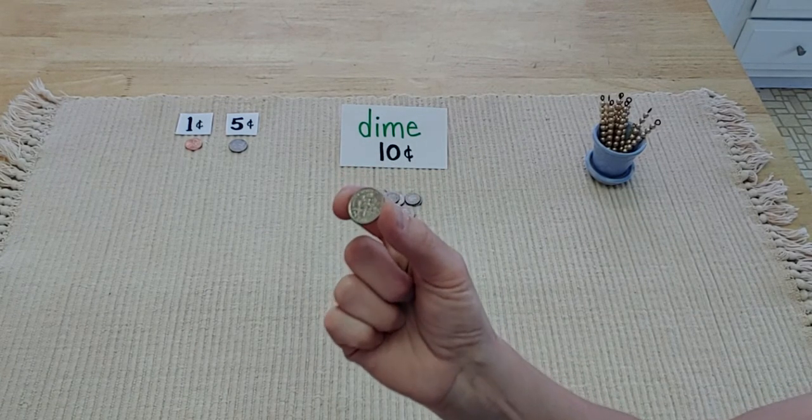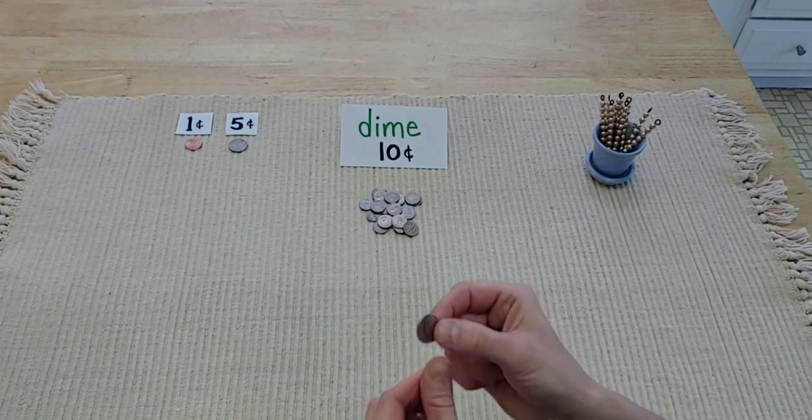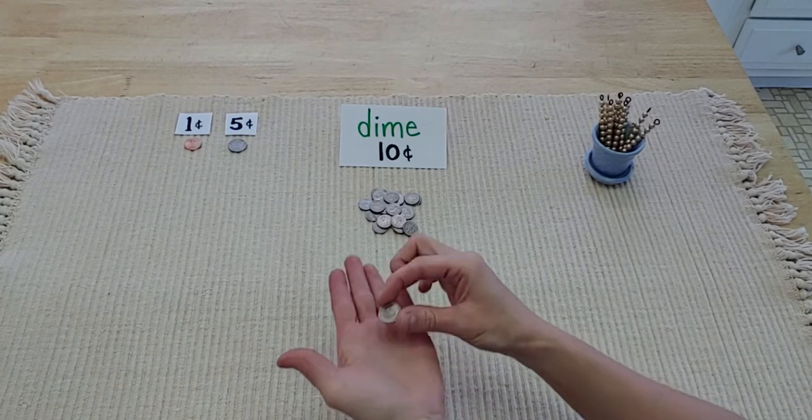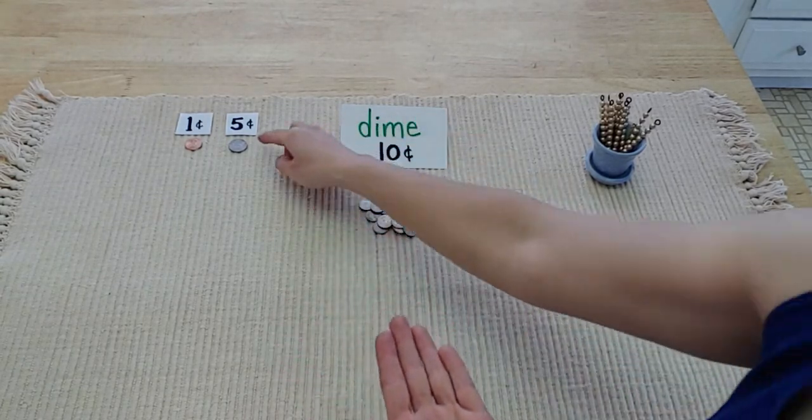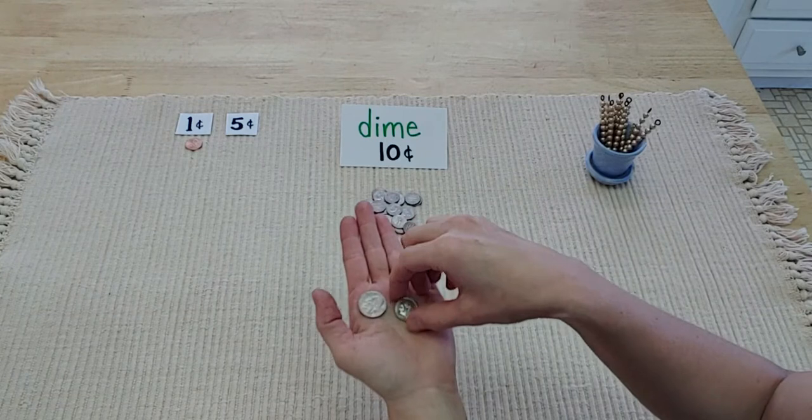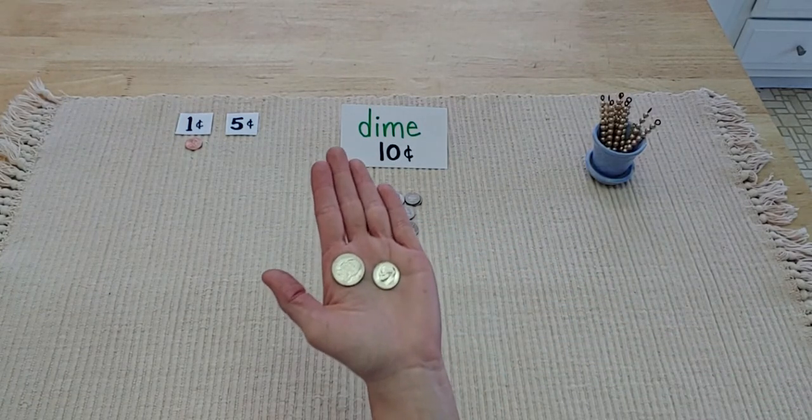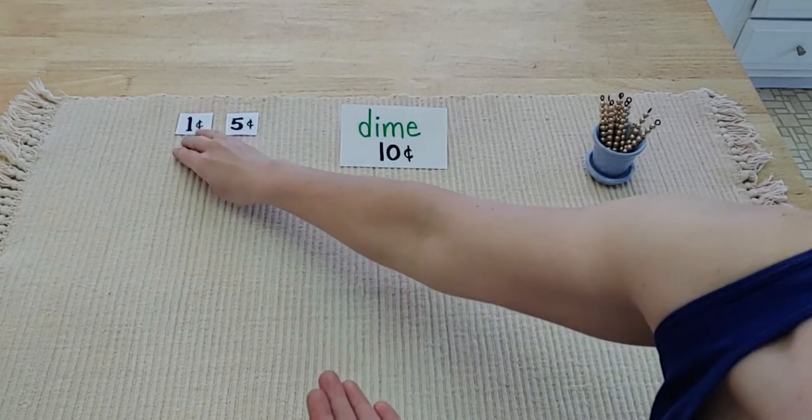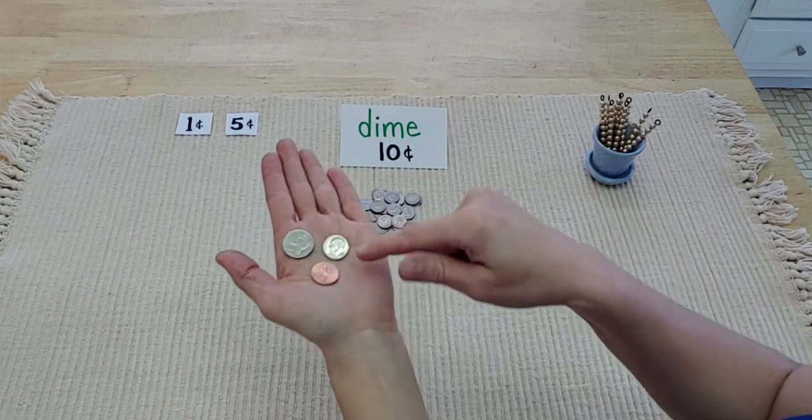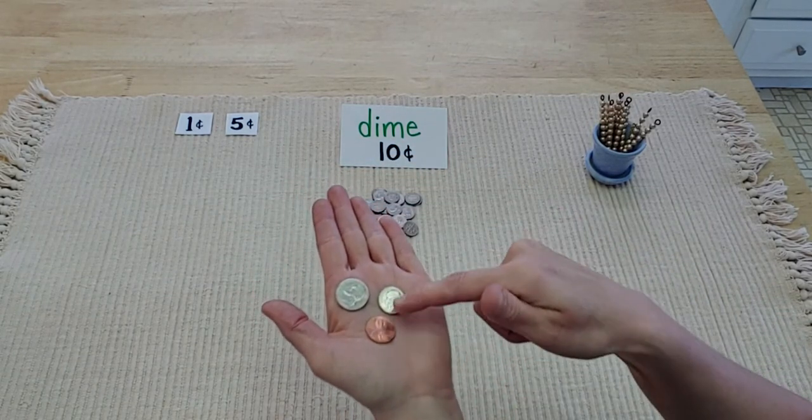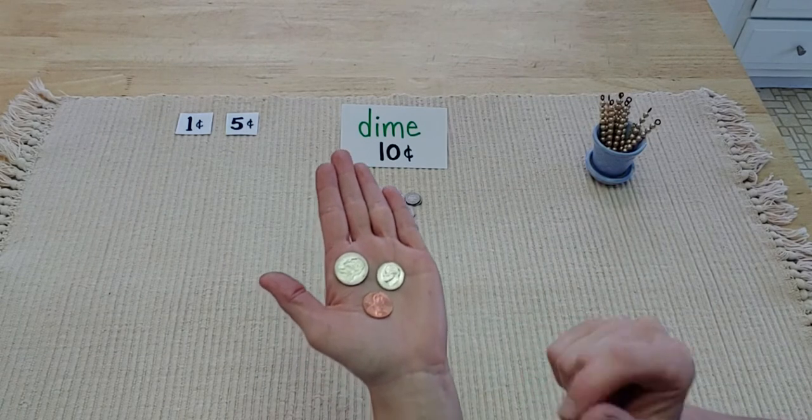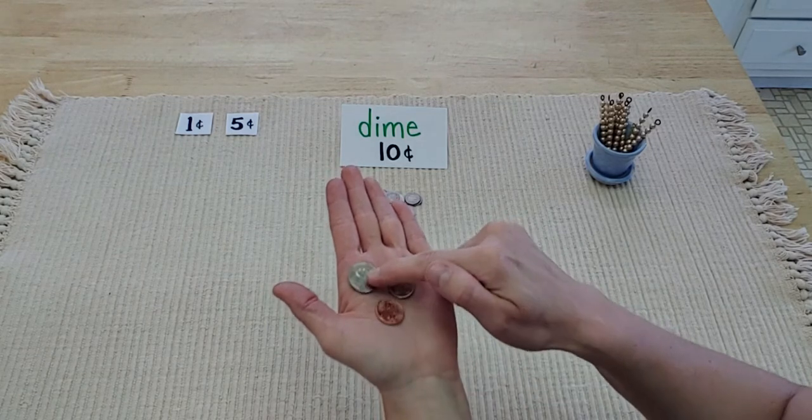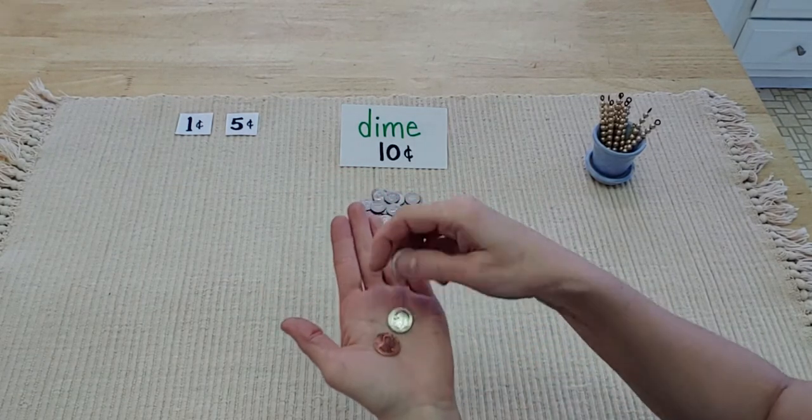Something else I want you to notice that kids get confused by: they see that this dime is so tiny and this nickel is a lot bigger, so they think the nickel must be worth more, right? No, no, no, don't get tricked! Even though the dime is smaller than the nickel and even smaller than this penny, it's actually worth more than both. So don't get fooled—this dime is little but it is worth a lot more than this nickel and this penny put together.